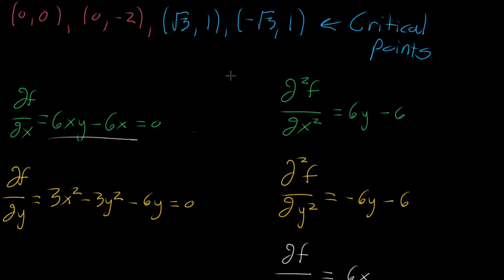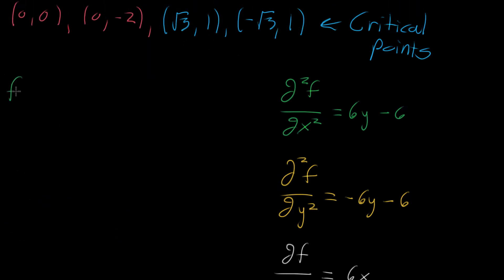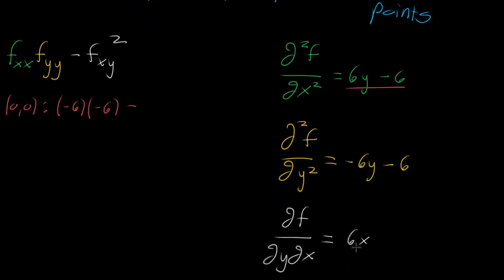Now we're going to plug in each of the critical points to the second partial derivative test expression. That expression is: we take f_xx multiplied by f_yy and subtract off the mixed partial derivative term squared. At the point (0,0): plugging in gives us negative six multiplied by negative six, minus zero squared — since x=0 makes the mixed partial zero — and that equals 36.